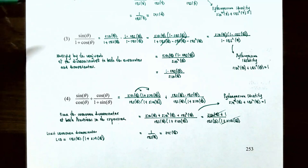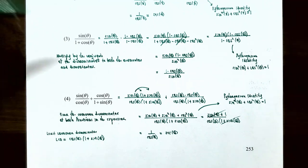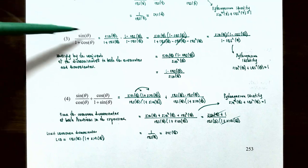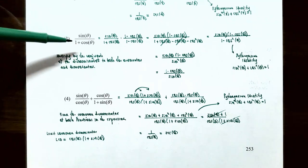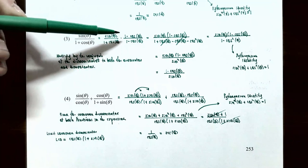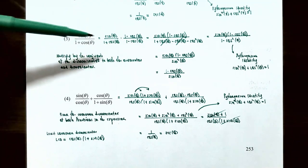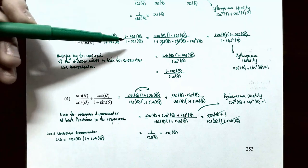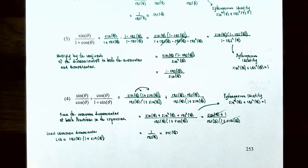Number three: simplify sine of theta divided by 1 plus cosine of theta. Since both sine and cosine are already in their simplest form, we multiply by 1 in a creative way — by the conjugate of the denominator. We multiply both the numerator and denominator by 1 minus cosine of theta, the conjugate of the denominator. The denominator then becomes a difference of squares: (1 + cos θ)(1 − cos θ), which by FOIL gives 1 minus cosine squared of theta.